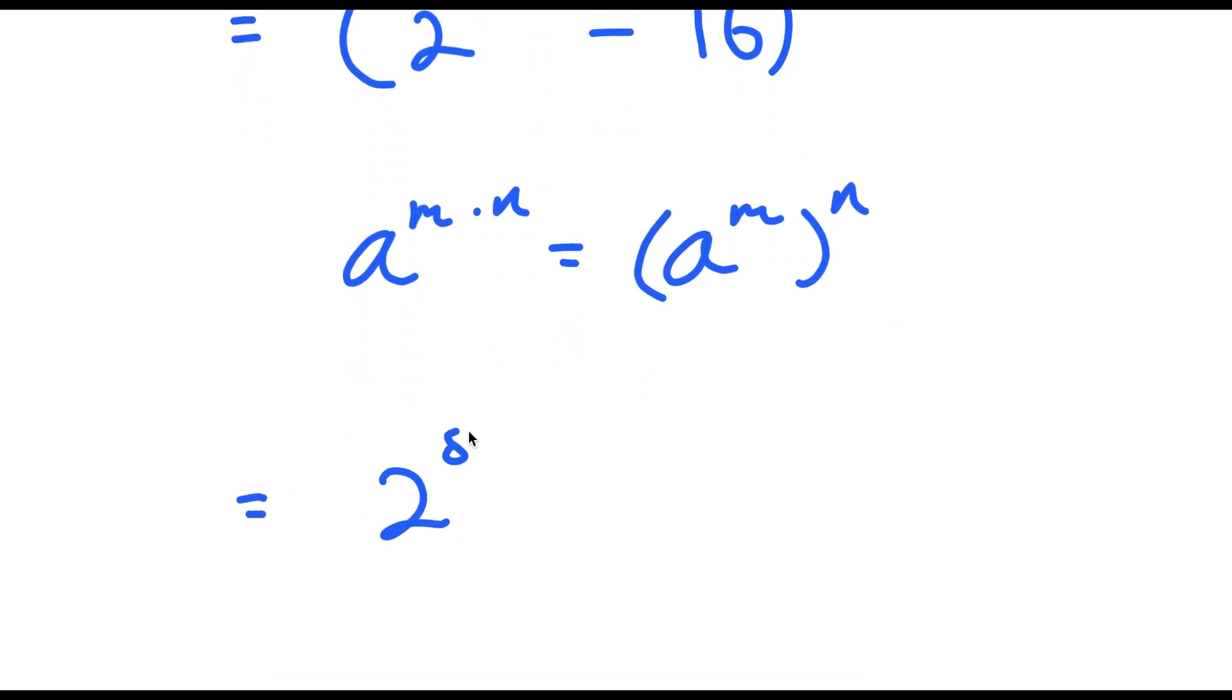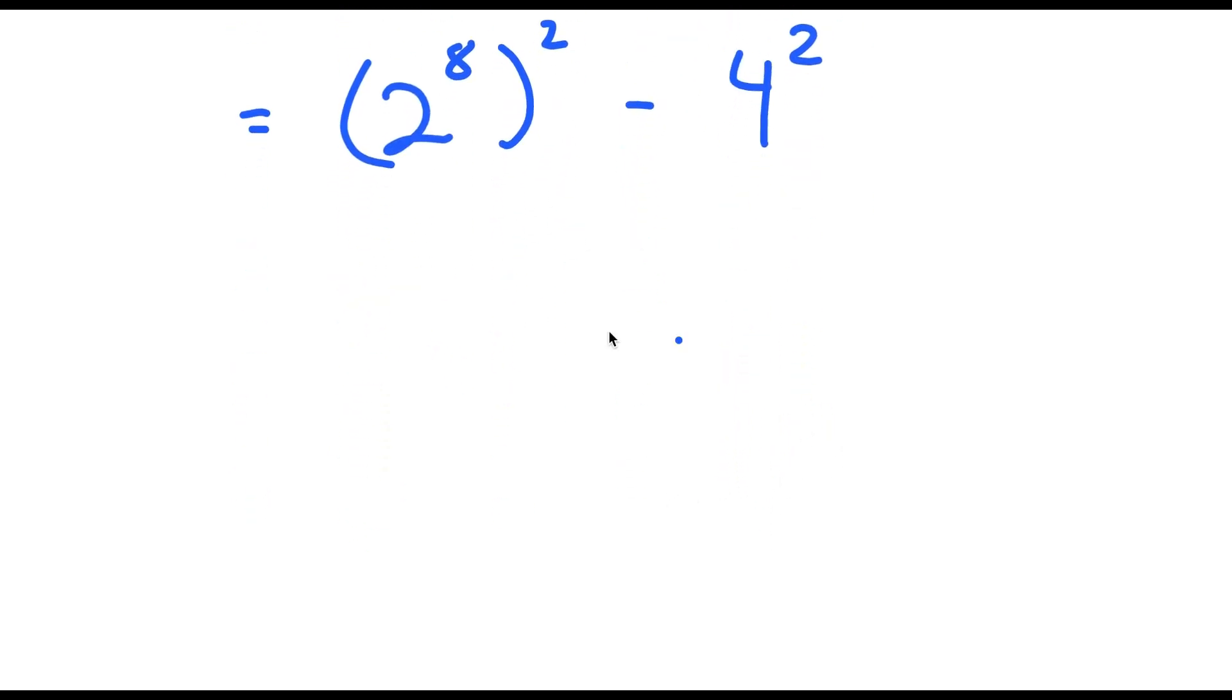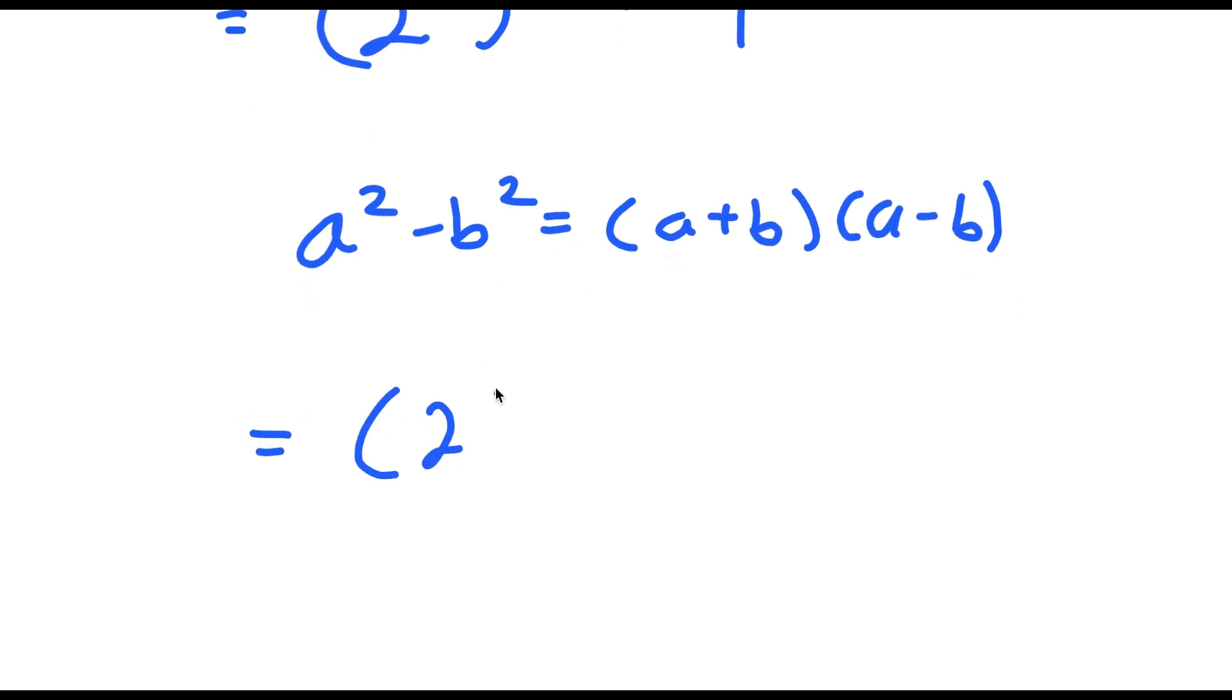So this turns into 2 to the power of 8 to the power of 2 minus 16, which is 4 squared. And now if I have something in the form a squared minus b squared, this is equal to a plus b times a minus b. So this turns into 2 to the power of 8 plus 4 times 2 to the power of 8 minus 4.